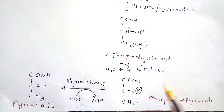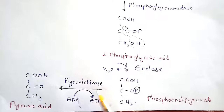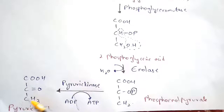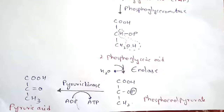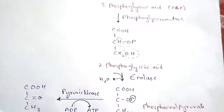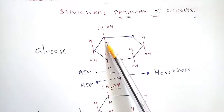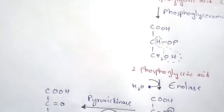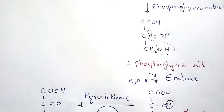Finally, phosphoenol pyruvate is converted to pyruvic acid by the enzyme pyruvate kinase, where ADP is utilized and ATP is produced. The pyruvic acid formed is a three-carbon compound, whereas the glucose at the start of glycolysis was a six-carbon compound. Thank you for watching — please like and subscribe, and comment any doubts in the comment box.